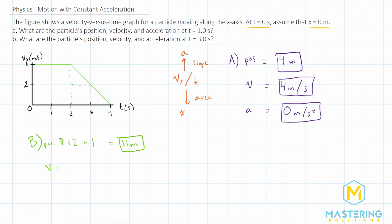Now for the velocity, we just read it straight off of the graph. And at three seconds, right here, if we go over, we are at two meters per second.